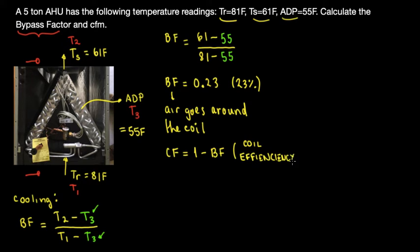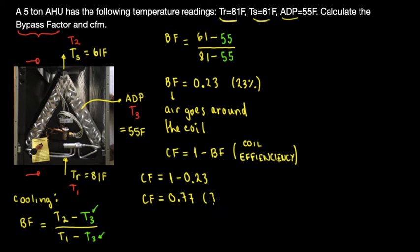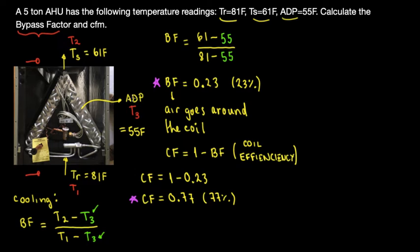The contact factor is one minus the bypass factor, and it represents the coil efficiency — sometimes denoted by the Greek letter eta for efficiency. One minus 0.23 gives a contact factor of 0.77, or 77%. So the bypass factor is 23% (air goes around the coil) and the contact factor is 77% (air goes through the coil), making the coil 77% efficient.